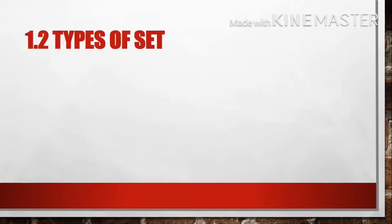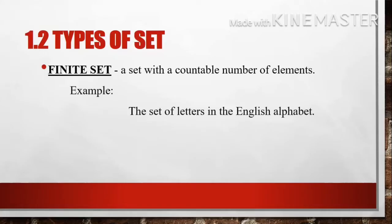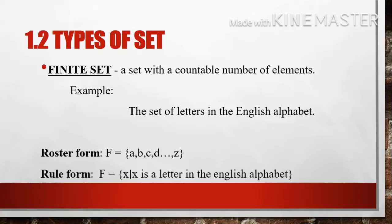Next type of set is the finite set — a set with a countable number of elements. Example: the set of letters in the English alphabet. In roster form, set F whose elements are A, B, C, D, up to Z. In rule form, set F = { X | X is a letter in the English alphabet }.